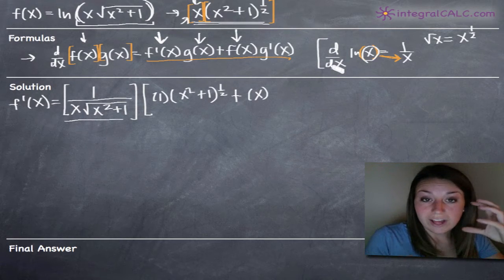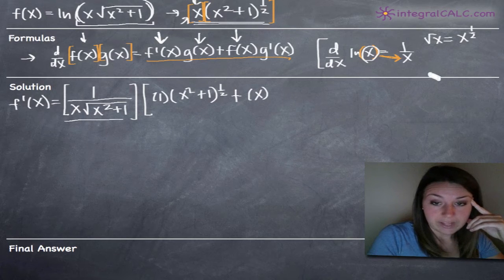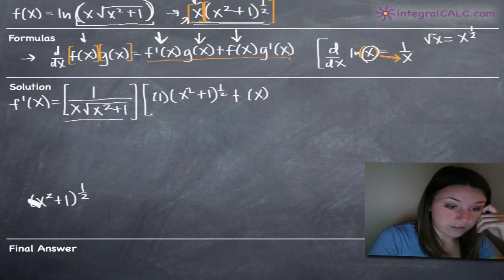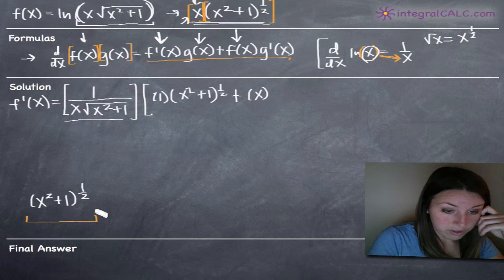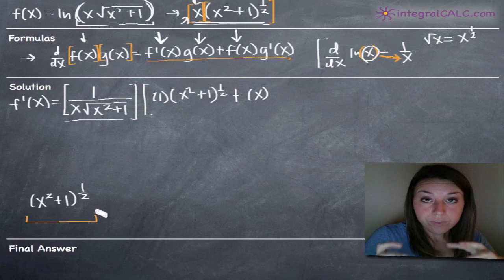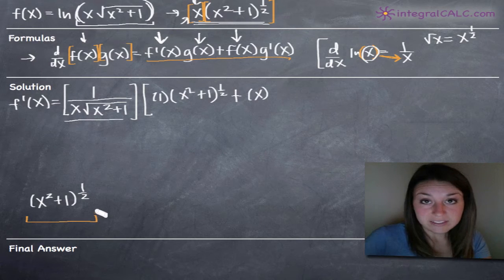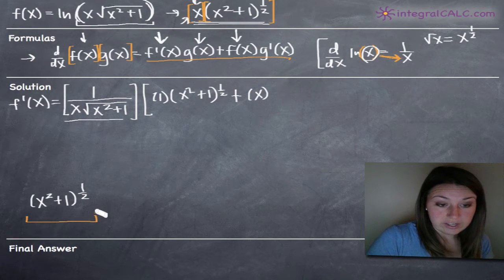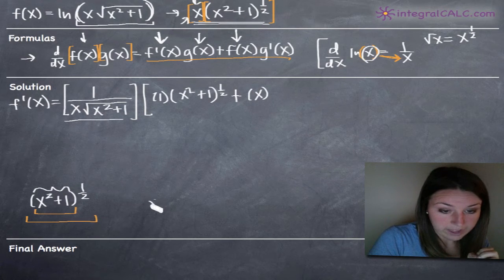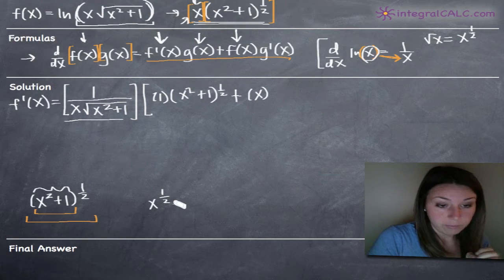To find the derivative of g of x, we actually need to use the chain rule. The derivative of x squared plus 1 to the 1/2 requires chain rule: we take the derivative of the outside function first, leaving the inside function completely alone, then multiply by the derivative of the inside. The outside function is essentially x to the 1/2, and the inside function is x squared plus 1.